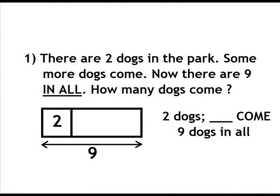Number 1. There are two dogs in the park. Some more dogs come. Now there are nine dogs in all. How many dogs come?